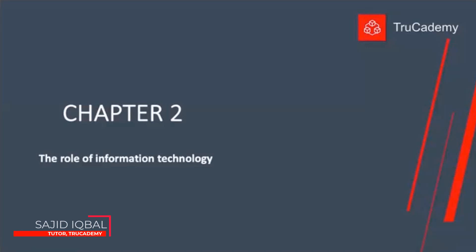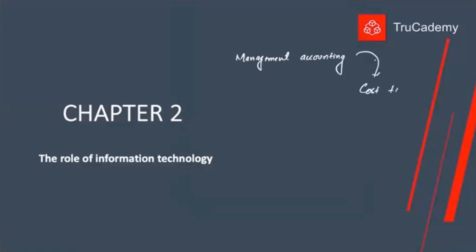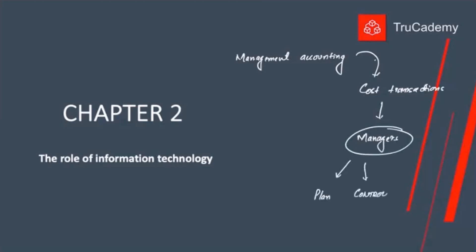Today let's start with Chapter 2: the role of information technology. As we have already seen in MA1 as well as in the first chapter, in management accounting we are supposed to collect cost data or cost transactions and then report it to managers so that managers can use it for planning, controlling, and decision making.